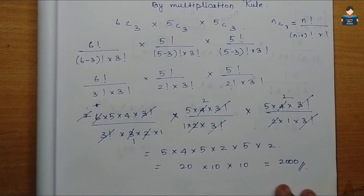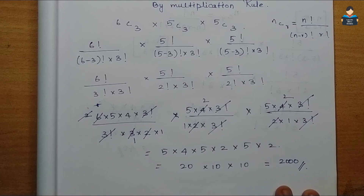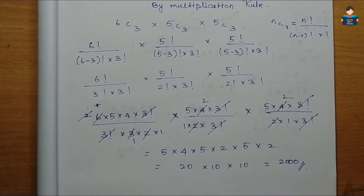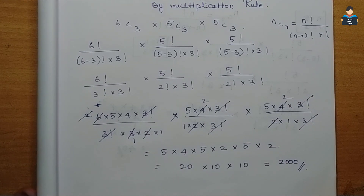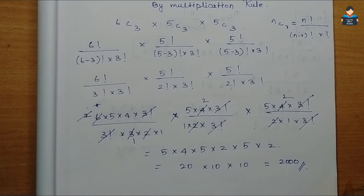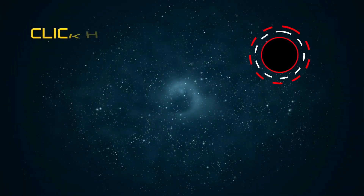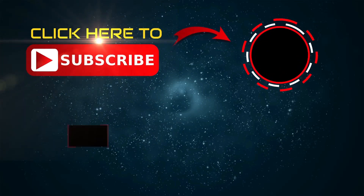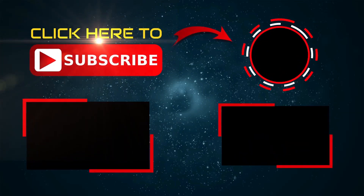The answer for the 5th sum is 2000. This video is complete. In the next video we will see more problems. Please like, share, and subscribe. Thank you.